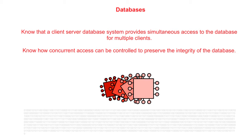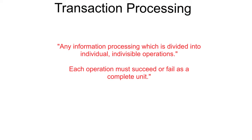In this video we take a look at transaction processing, ACID rules, record locking and redundancy. Transaction processing is any information processing which is divided into individual, indivisible operations that we call transactions. Each of these transactions must succeed or fail as a complete unit. It can never be only partially complete.